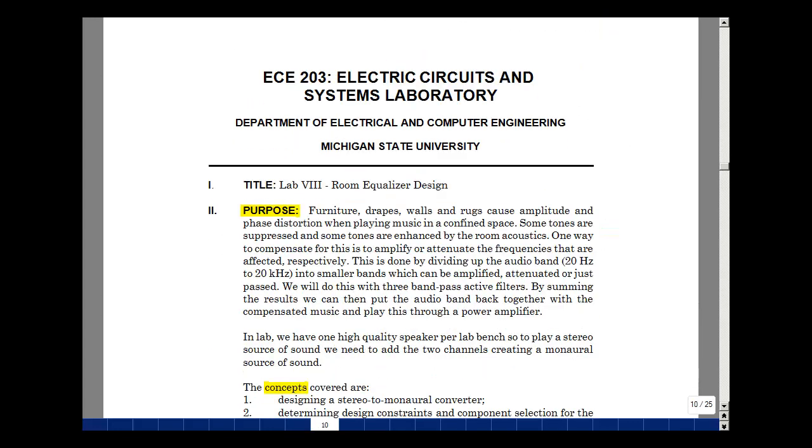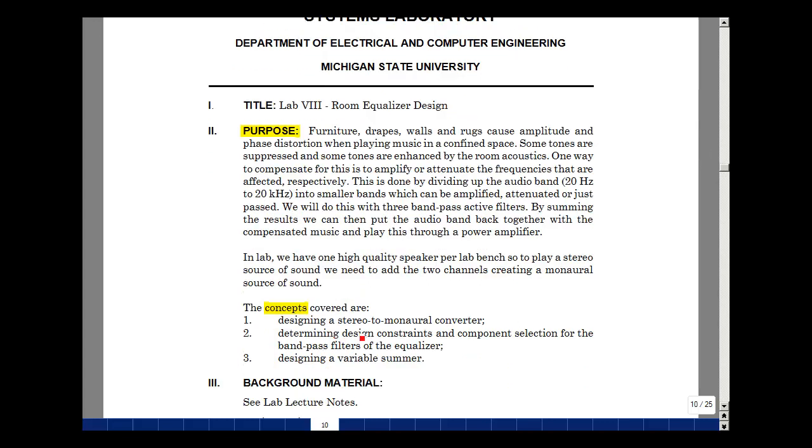The purpose of this lab was to design a room equalizer to compensate for furniture, drapes, walls, and rugs that can cause amplitude and phase distortion. Some of the concepts that we covered were designing a stereo-to-monoral converter, determining design constraints and component selection for bandpass filters for the equalizer, and lastly designing a variable summer. This is a two-week lab. There'll be a quiz at the first time you come to the lab on the background material, which includes these notes and the video, as well as the lab procedure. When you come to the lab the second time, there will not be another quiz. This is lab number eight, room equalizer design.